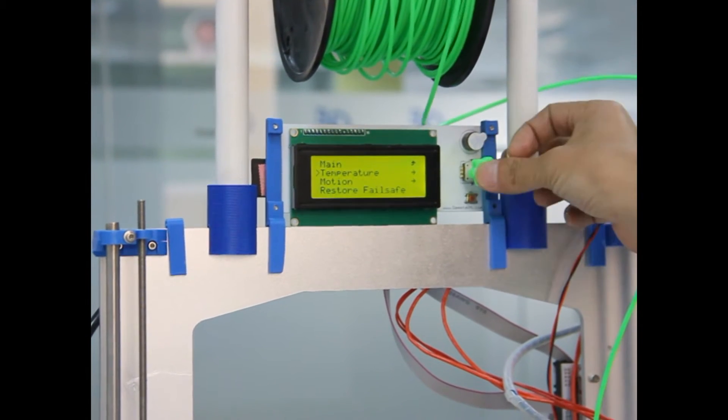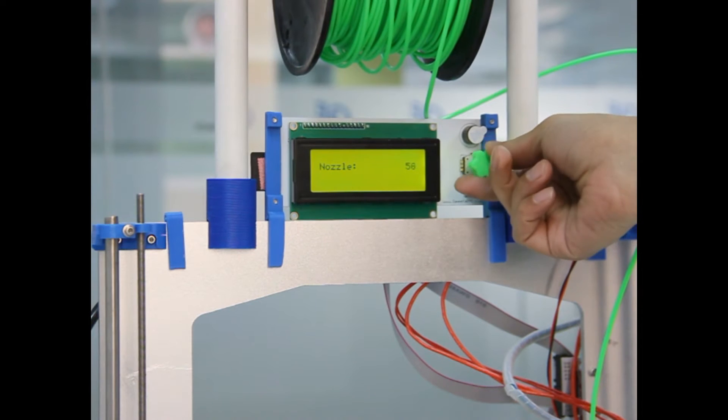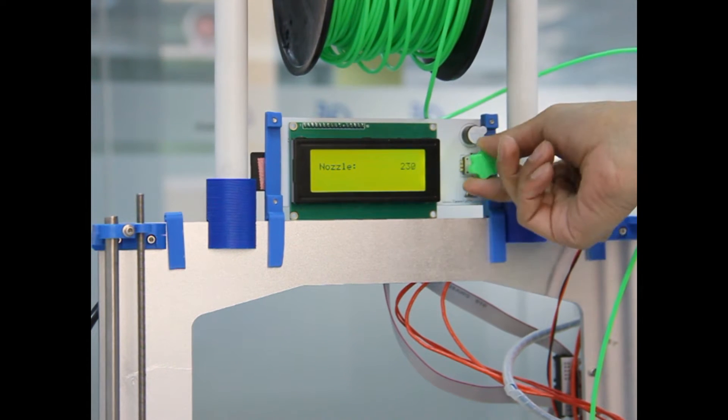The most significant difference between i2 and i3 is the structure. Same method to use the LCD display.